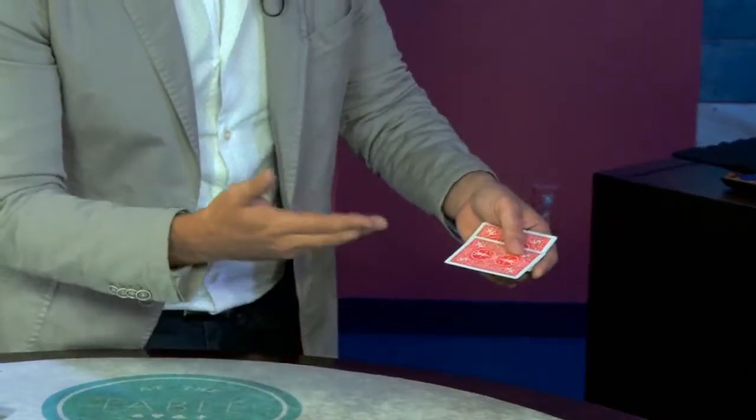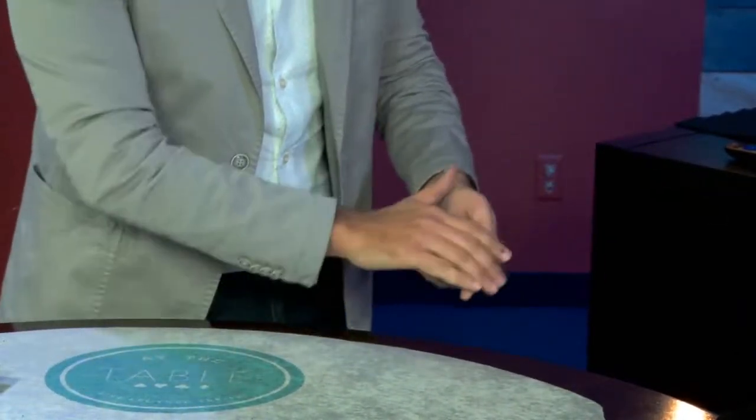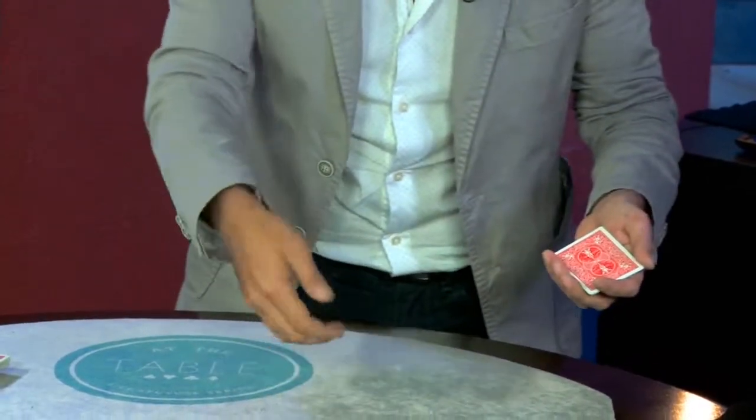I'll teach you, Greg, how casino cheaters do their cheatings. This is how they do it. They take one card, they palm in their hand, and they're invisible.